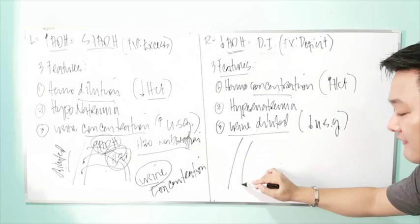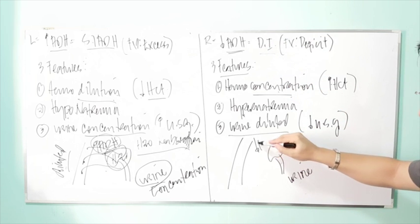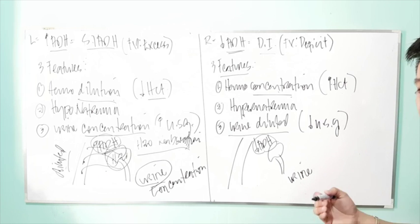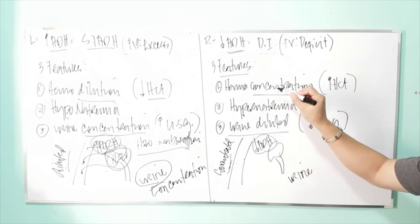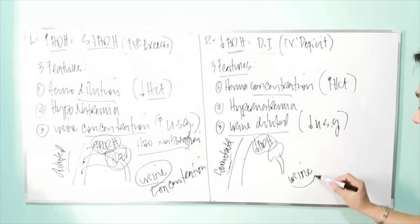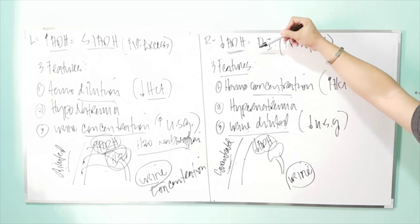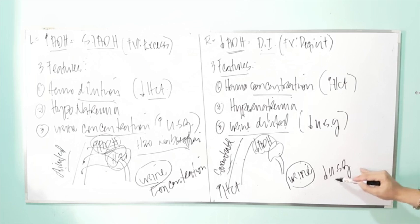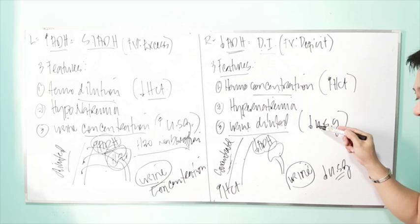In diabetes insipidus, hyposecretion of ADH means less water is reabsorbed, so no water goes back to the system — the blood becomes concentrated, giving hemoconcentration. The urine becomes diluted because water stays in it. An increased urine specific gravity means the urine is concentrated; a decreased urine specific gravity means the urine is diluted. The normal urine specific gravity is 1.010 to 1.025.